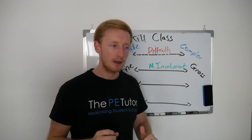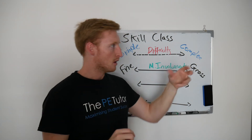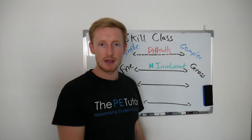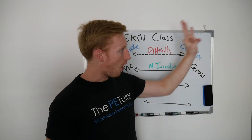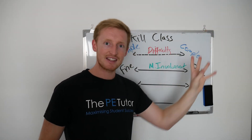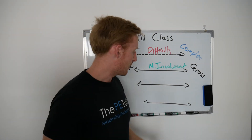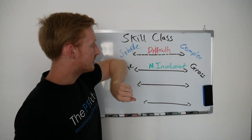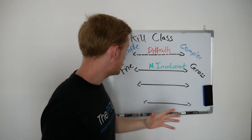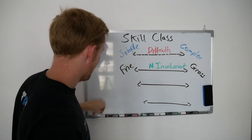Think of a professional darts player. Their fine motor skill of throwing the darts means their ratios are probably something like 80-90% within a centimetre of the triple 20. That's a tiny margin for error, but they're able to consistently produce that same result because it's a fine skill and precision is the intended outcome. So continuum number one is difficulty with simple and complex. Continuum number two is muscular involvement with fine and gross. Our third one is pacing.